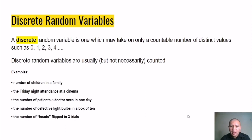A discrete random variable is one which may take on only a countable number of distinct values, such as 1, 2, 3, 4, and so on. Discrete random variables are usually, but not necessarily, counted. For example, we have here a number of children in a family. Since it is mentioned that discrete variables can be counted, we can say that the number of children in a family, particularly in the Philippines, averages between 3 and 4.